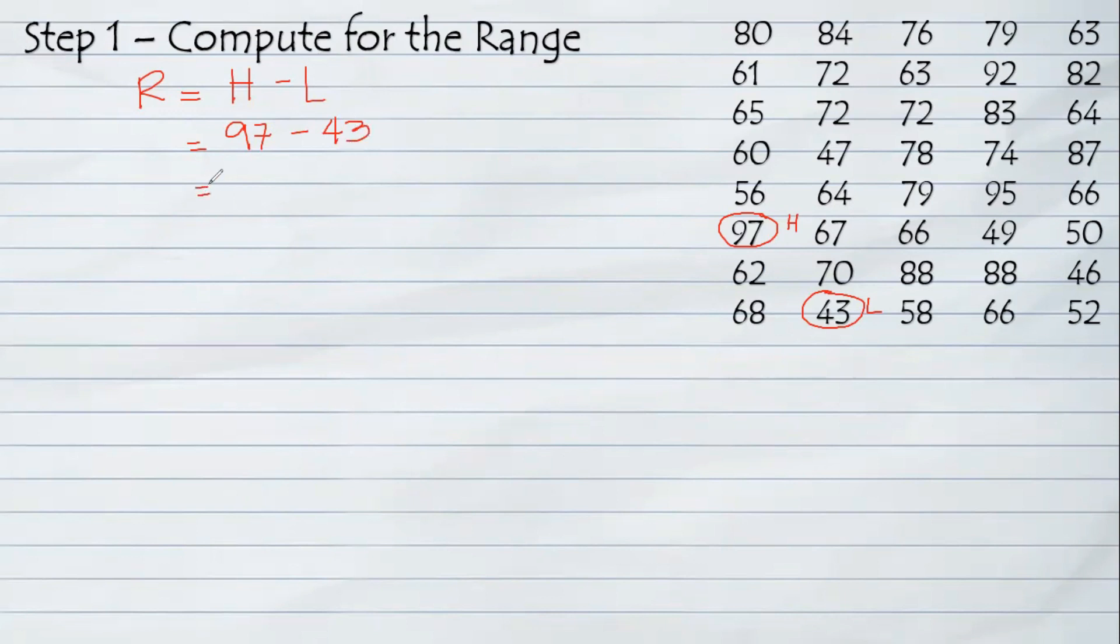If you subtract directly, we have now the result of the range. So our range now, if we subtract 97 to 43, results to 54.